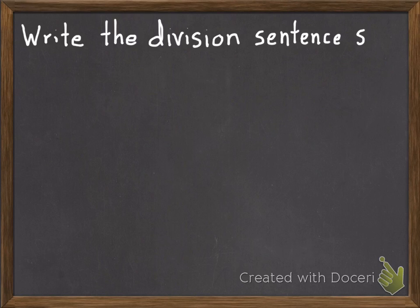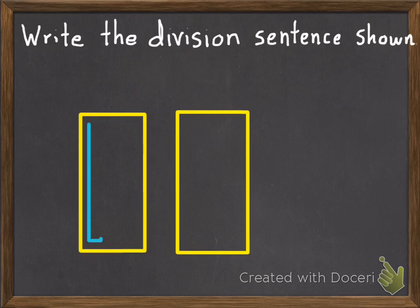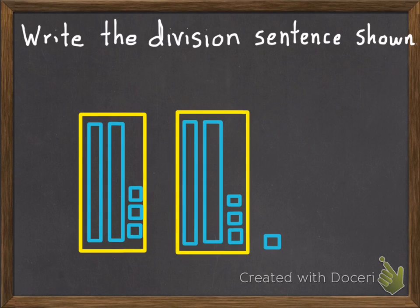One more example, the opposite. So we want to write the division sentence shown. So this time they have all the pictures for us. They want to know what the problem was for our division sentence. So first I want to see what my dividend is, how many total things I have. So I have 7 ones and I have 4 tens. So I have a total of 47 things.